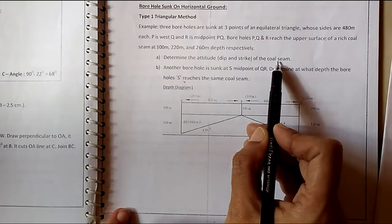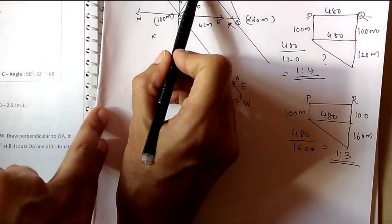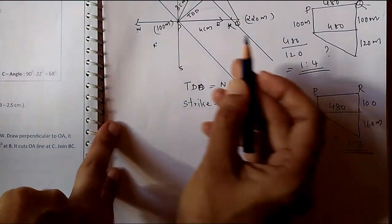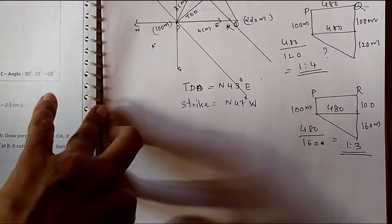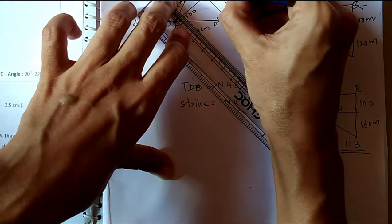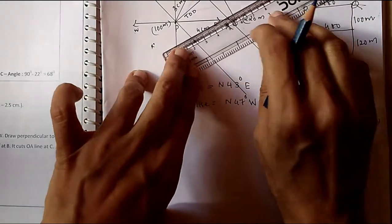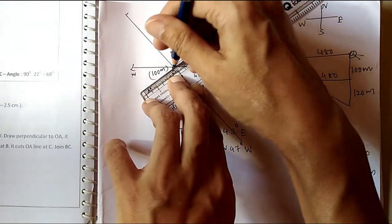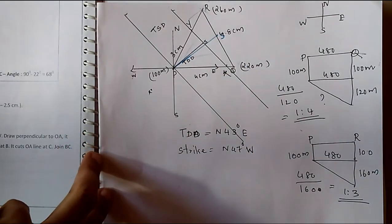The next part: another borehole is sunk at S, the midpoint of QR. Since QR is 4.8 centimeters, the midpoint S will be at 2.4 centimeters — mark S at that point. To find the depth at which S reaches the coal seam, join P to S and extend the line from P through S. No extra drawing is needed beyond this.